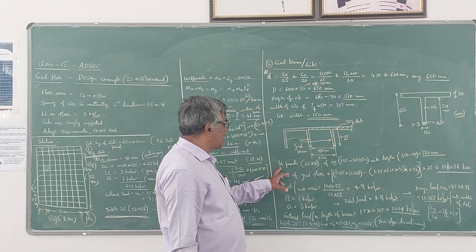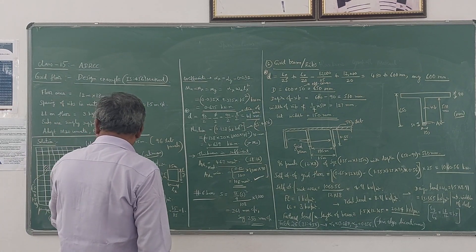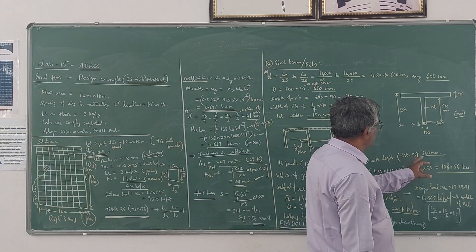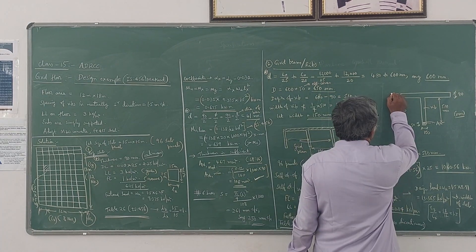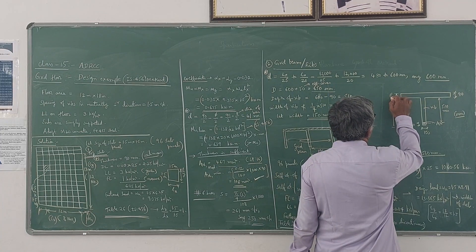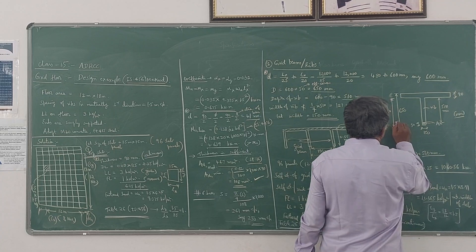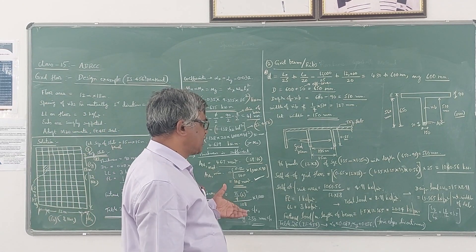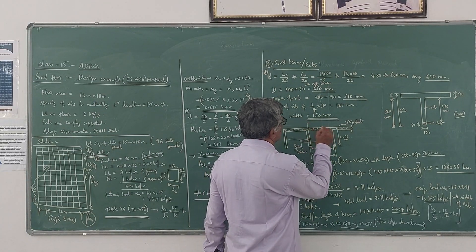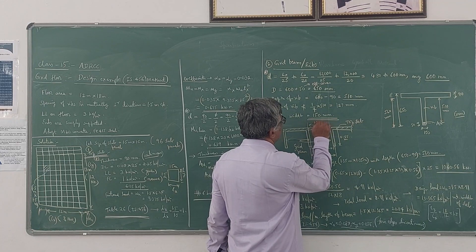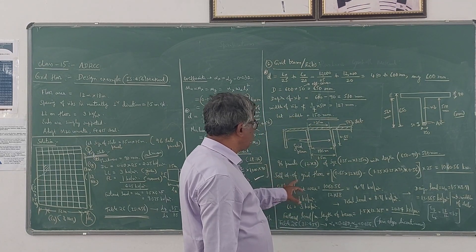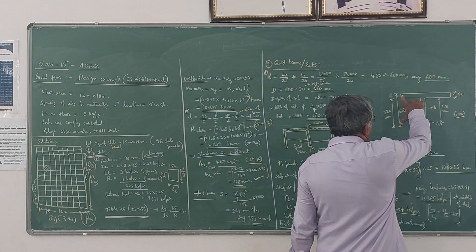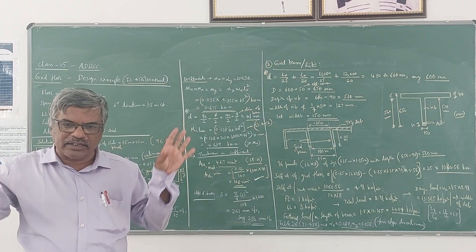There are 96 panels in total, each of size 1.35 m × 1.35 m, with a rib depth of 560 mm overall depth. Note: 560 mm is the overall depth and 510 mm is the effective depth. To calculate the self-weight of the grid floor, we consider the entire floor as a solid slab and then subtract the hollow rib portions.